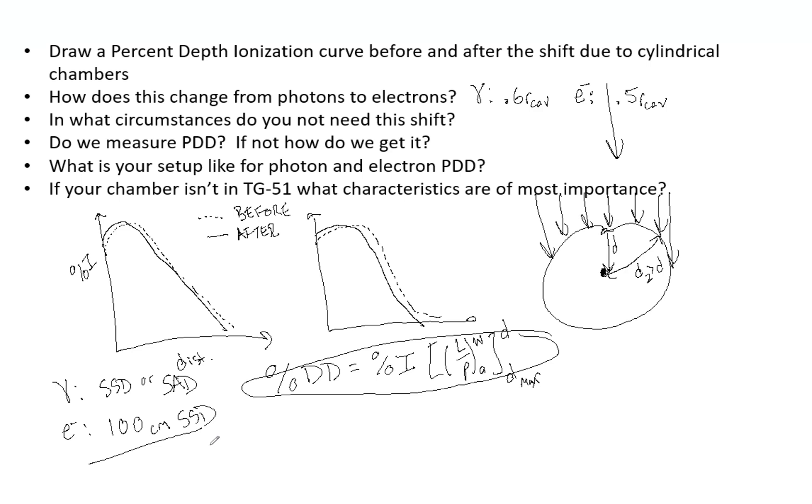So the closest matching chamber with the characteristics in priority are, one, the chamber wall material. That is the most important thing. So if you have to look up another chamber to compare to your chamber, chamber wall material is the first thing. Then look at cavity radius. Then look at central electrode material. And finally, consider wall thickness.